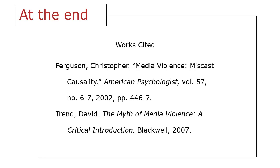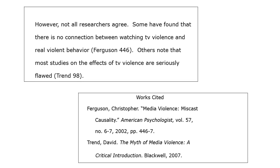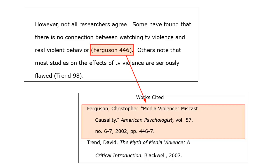The second part is at the end of your paper, where you give a list called Works Cited, which has all the sources you cited in-text in your paper. For each source, you need to give the information that you would need if you wanted to locate a copy of it. The two parts work together — the in-text citations refer to the full information about the source listed in the references at the end. You need to have both parts to cite correctly and avoid plagiarism.